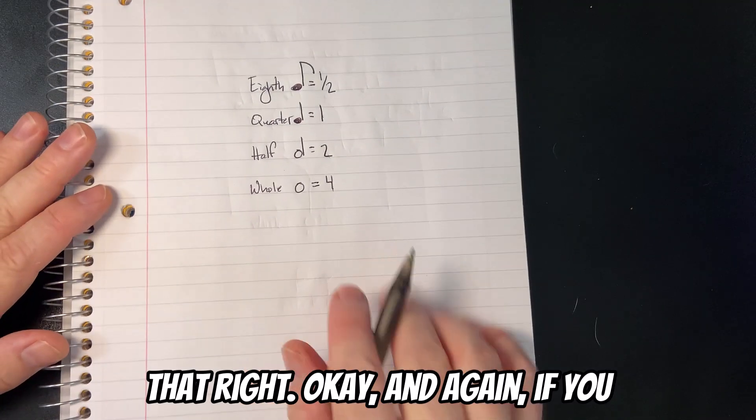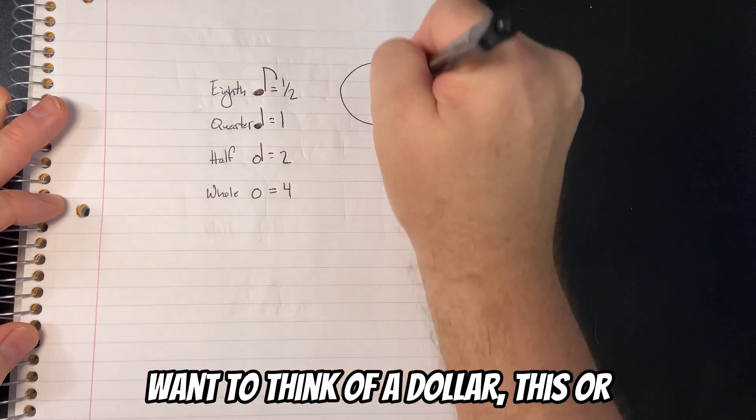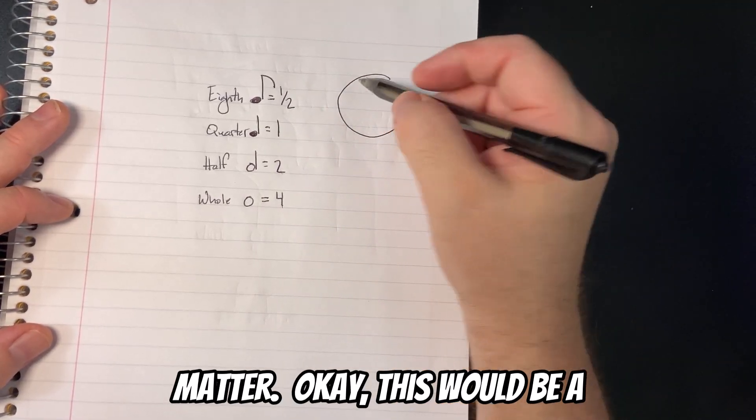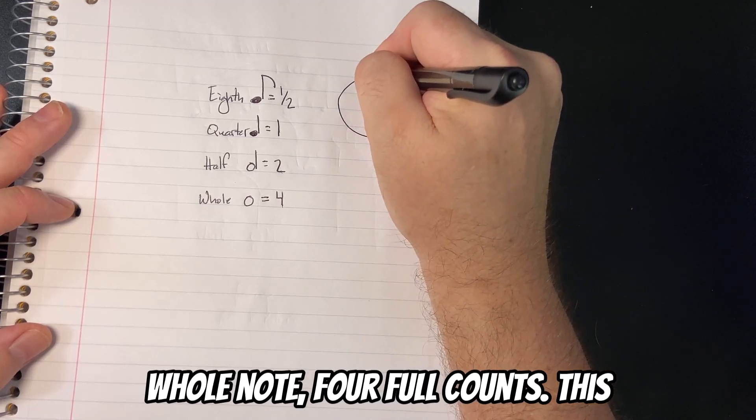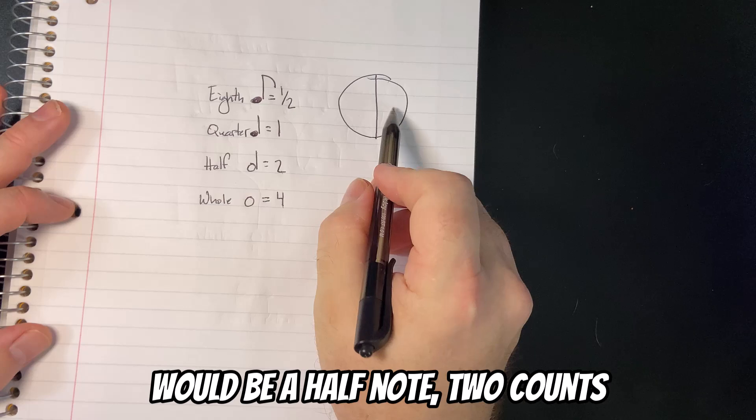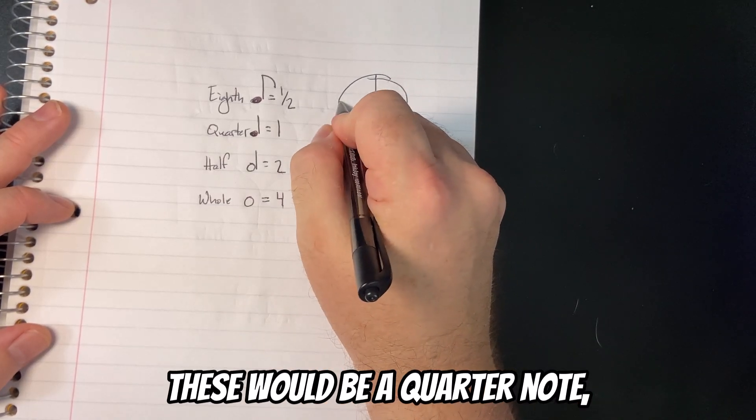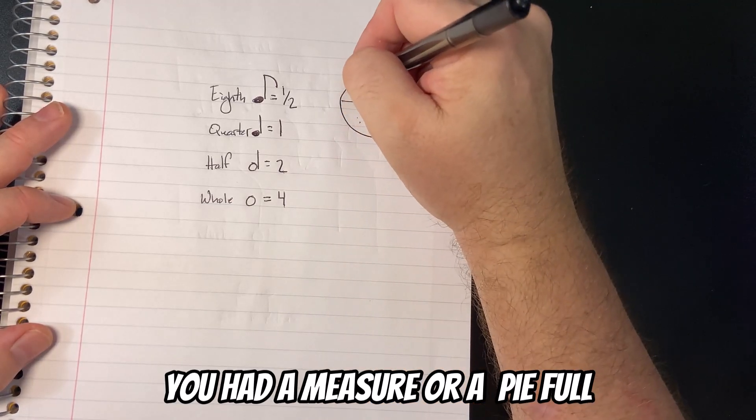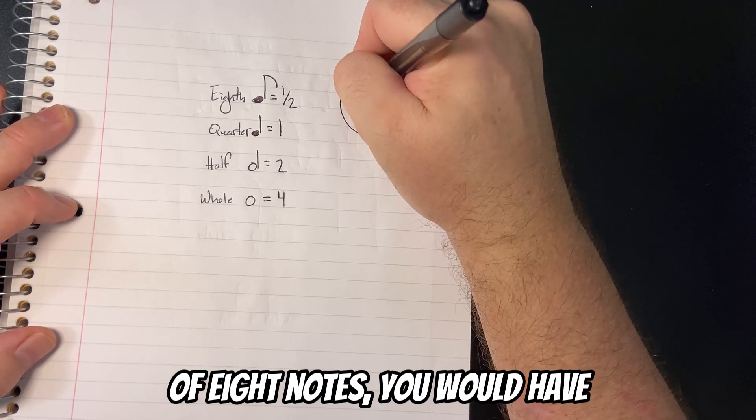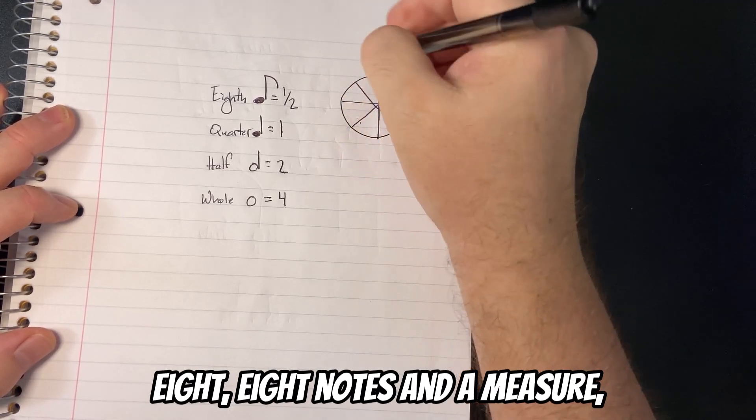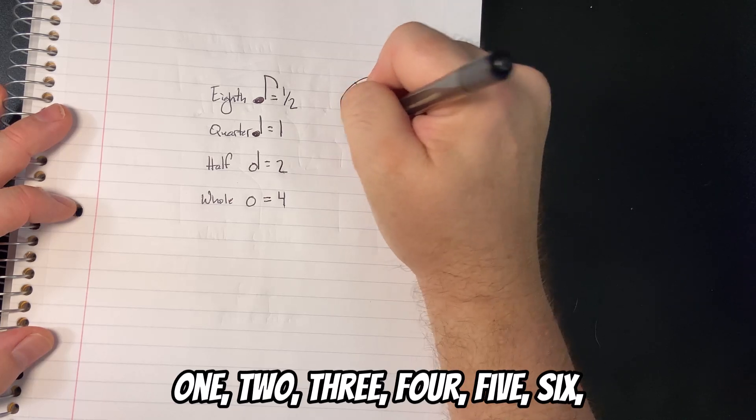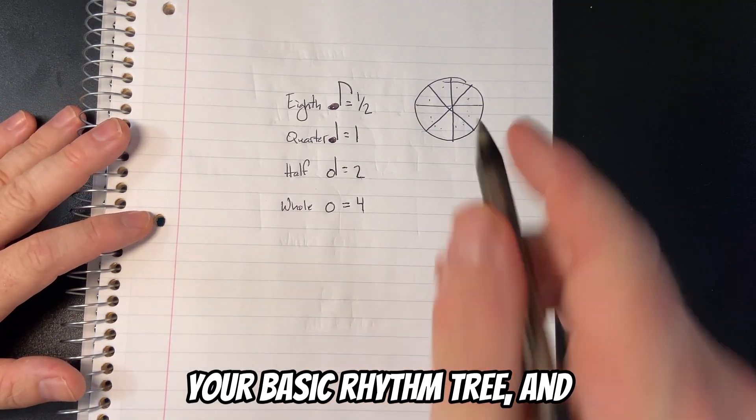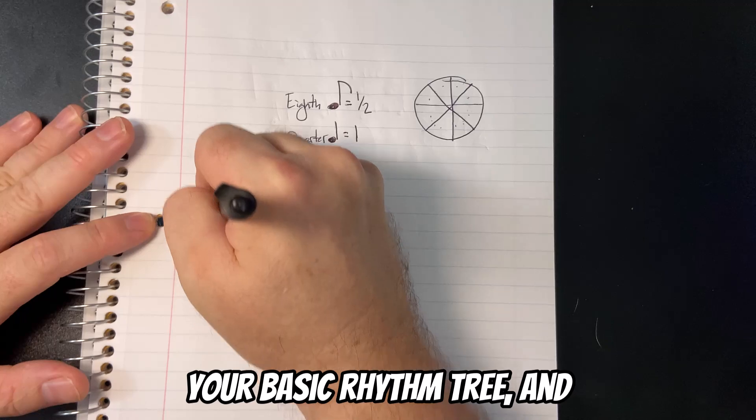And again, if you want to think of a dollar, or a pie or a pizza, it doesn't really matter. This would be a whole note - four full counts. This would be a half note - two counts and two counts. Each one of these would be a quarter note: one, two, three, four. And then if you had a measure or a pie full of eighth notes, you would have eight eighth notes in a measure: one, two, three, four, five, six, seven, eight. And that is your basic rhythm tree.